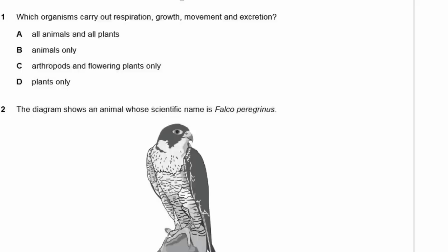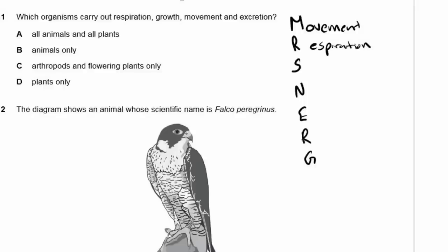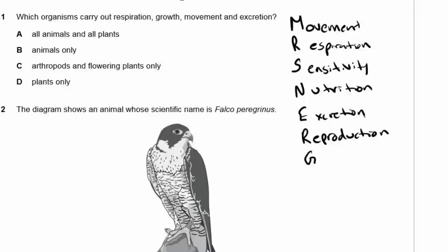Question 1: Which organisms carry out respiration, growth, movement, and excretion? The saying I use is Mrs. Nerg: Movement, Respiration, Reproduction, Sensitivity, Nutrition, Excretion, and Growth. These are the characteristics that all living things possess. So plants are not all living things, and it's not just animals — it is all living things. The answer is A.